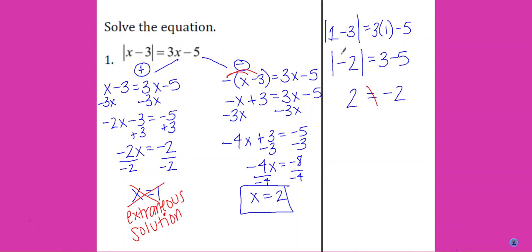This happens because the absolute value is there. If the absolute value hadn't been there and it had just been x minus 3 equals 3x minus 5, this answer would have worked out great. But because of the absolute value, it doesn't work when we plug it back in, even though we did all our calculations correctly. So it's an extraneous solution, and our only solution is x equals 2.